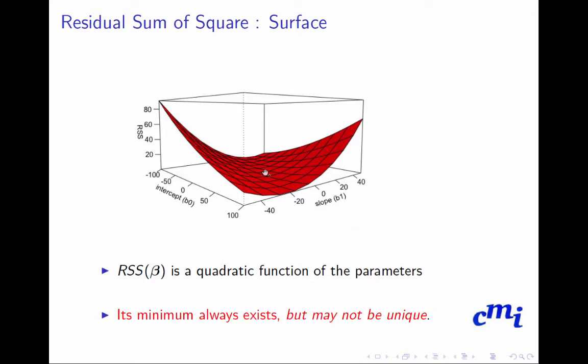That indicates RSS beta, or residual sum of squares of beta, is a quadratic function of parameters. Its minimum always exists but may not be unique.